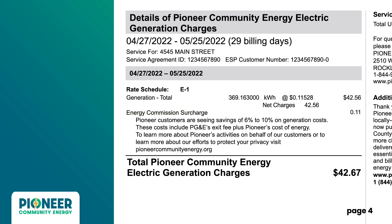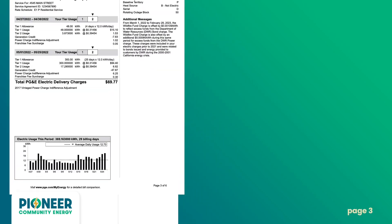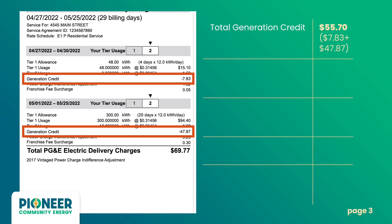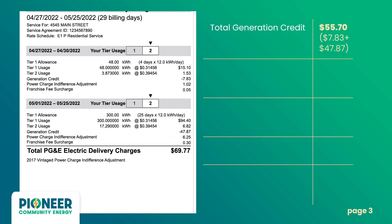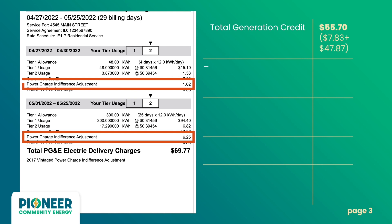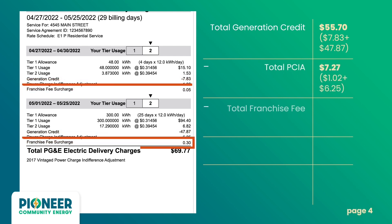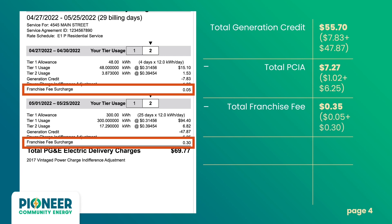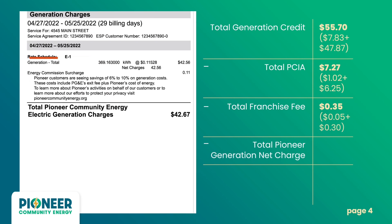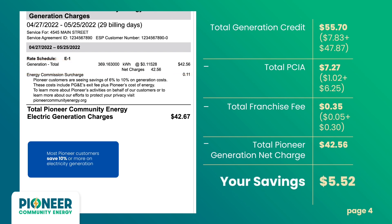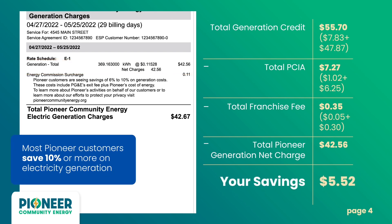Pioneer strives to offer competitive rates. Here is the equation to find your savings. Start with your total generation credit — on this sample bill, it is $55.70. Next, subtract the total PCIA. Then, subtract the total franchise fee. Finally, subtract the total Pioneer generation net charge. The new total equals your monthly savings with Pioneer.